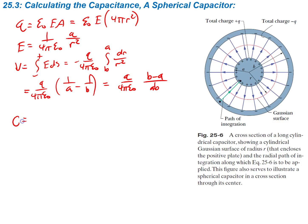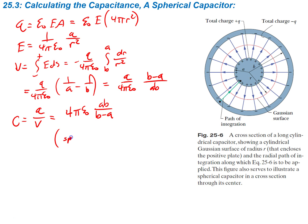To find the capacitance, use C equals Q over V. Plugging in what we found for Q and V, a bunch of terms cancel, and we end up with C equals 4π ε₀ AB over (B minus A). This is the capacitance for a spherical capacitor.